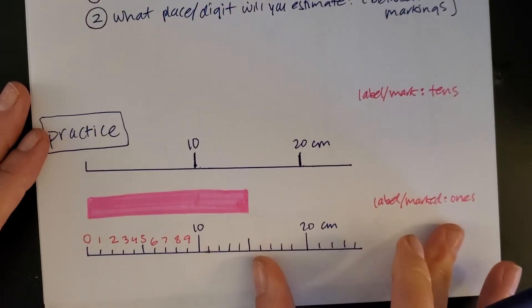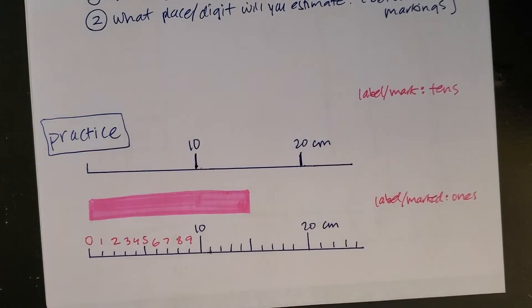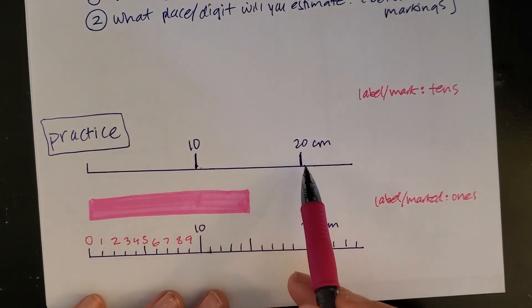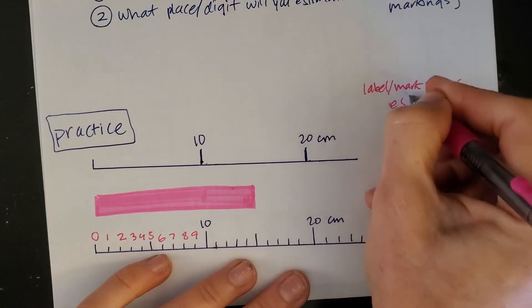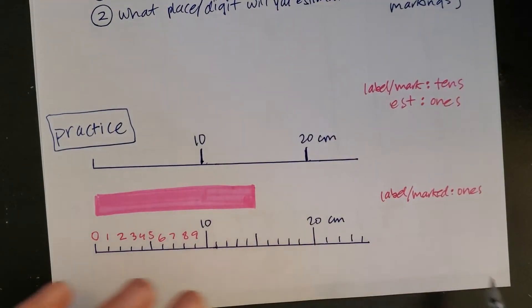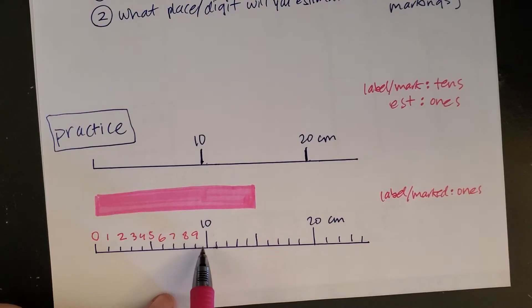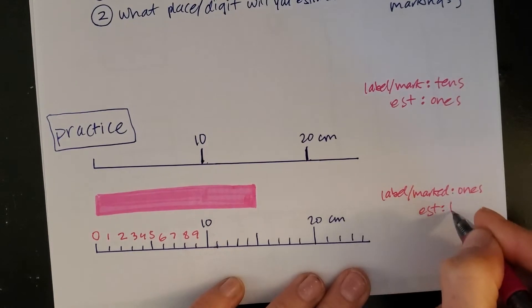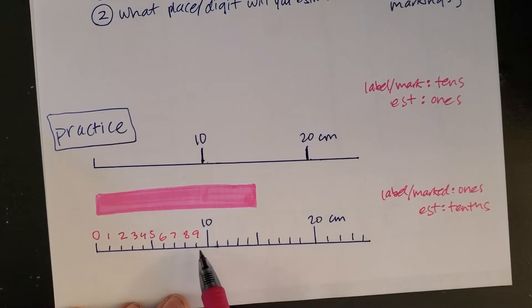In other words, if I look back down here at these two tools, if I'm looking here between 10 and 20, what I need to estimate is the ones place, right? So if I'm looking at the tens are marked, then what I will estimate is the ones place. Notice I'm not even worried about the objects still, I'm just getting a sense of what the tool is I'm working with. Here I can see that the ones are marked, so when I go to estimate, it'll be estimating where is it between 9 and 10. So I'm going to estimate the tenths place. Is it 9.1? Is it 9.5?